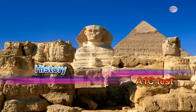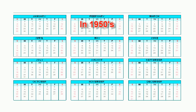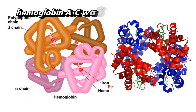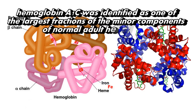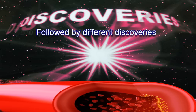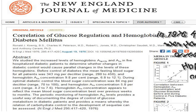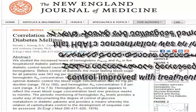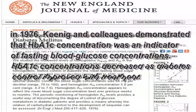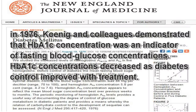History of A1c Test. In the 1950s, hemoglobin A1c was identified as one of the largest fractions of the minor components of normal adult hemoglobin. Following different discoveries, in 1976, Koenig and colleagues demonstrated that HbA1c concentration was an indicator of fasting blood glucose concentrations, and that HbA1c concentrations decreased as diabetes control improved with treatment.